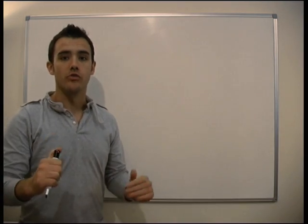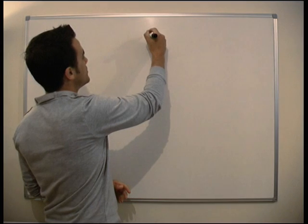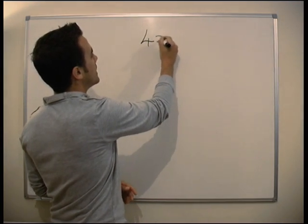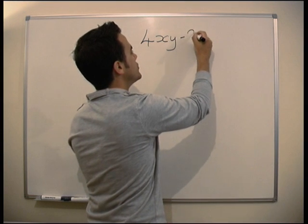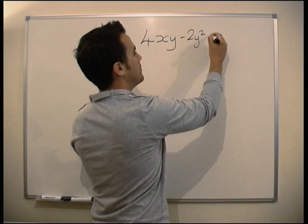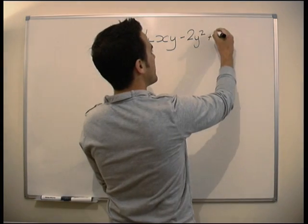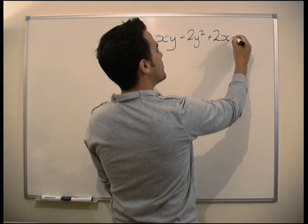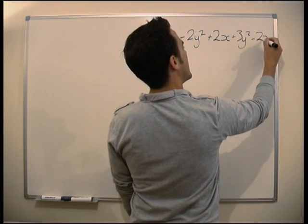So just one more quick question on simplifying down. Slightly more complicated this one. We've got 4xy - 2y² + 2x + 3y² - 2xy.